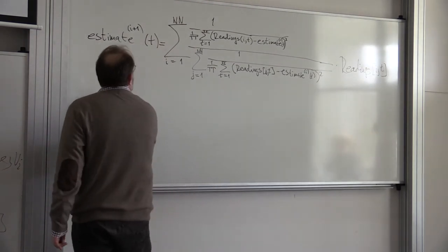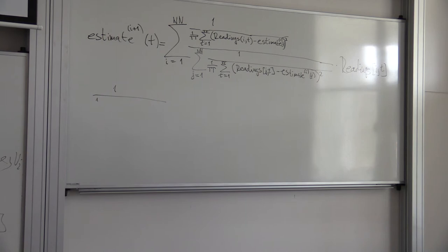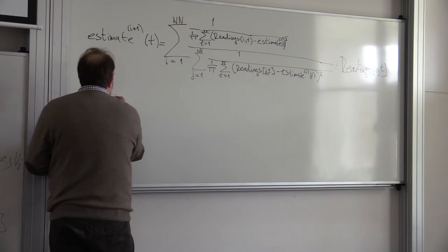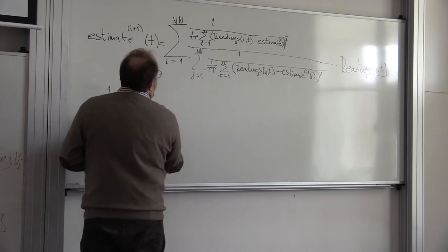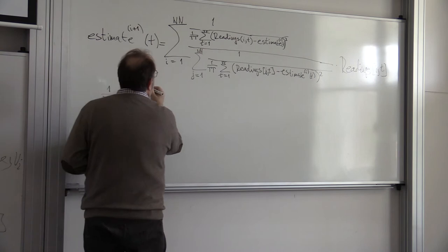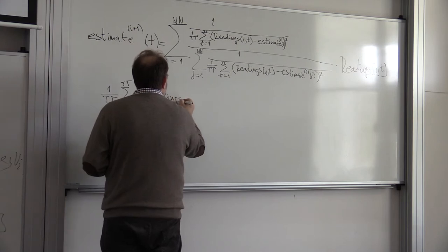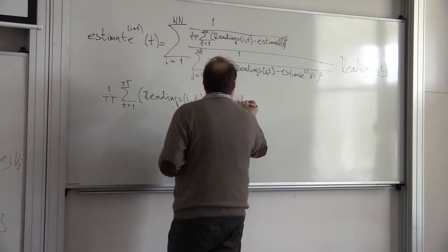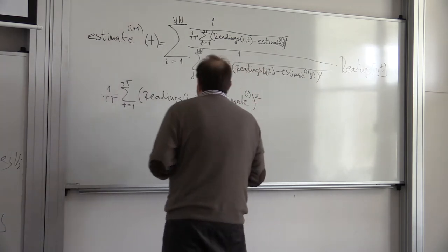And then here we will have readings j phi minus estimate of course t, estimate previously obtained at t, and then squared times readings of the sensor phi at instant t. What is this factor here? This factor here is essentially...